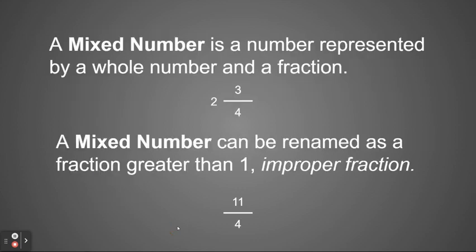A mixed number is a number that is represented by a whole number and a fraction. An example would be 2 and 3 fourths. A mixed number can be renamed as a fraction greater than 1, which is called an improper fraction.